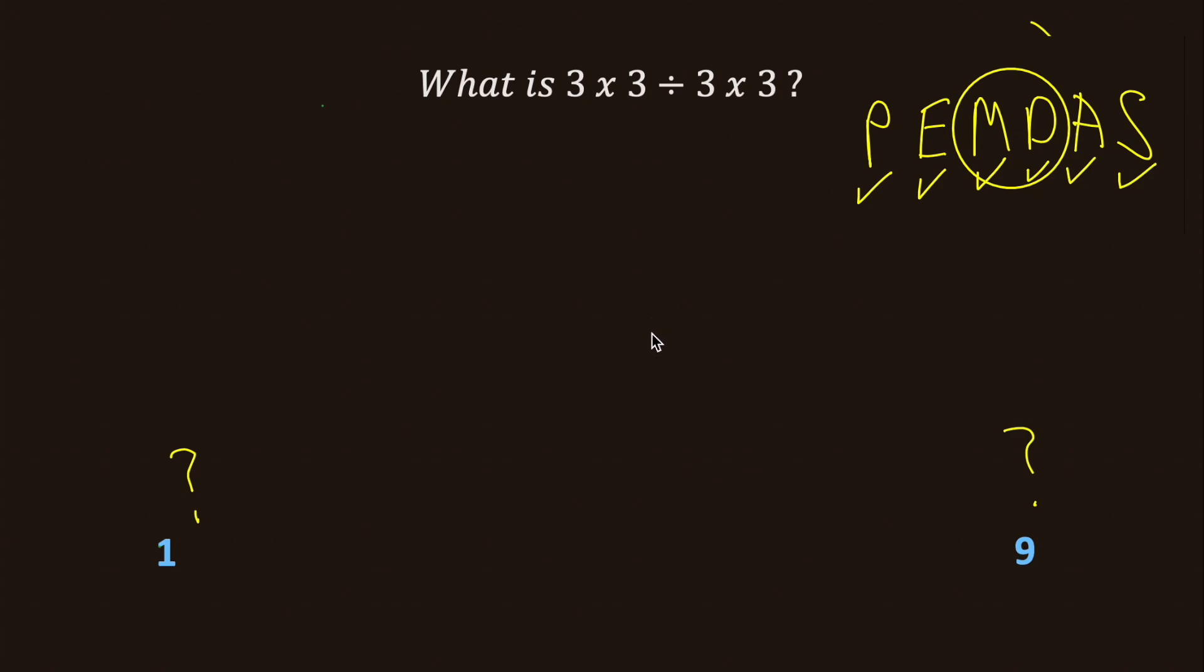That is, we simply do them in order from left to right. So 3 times 3 divided by 3 times 3. First, 3 times 3. We get 9 divided by 3 times 3.